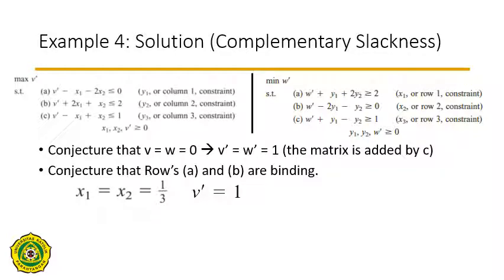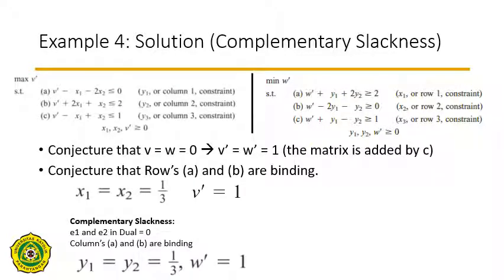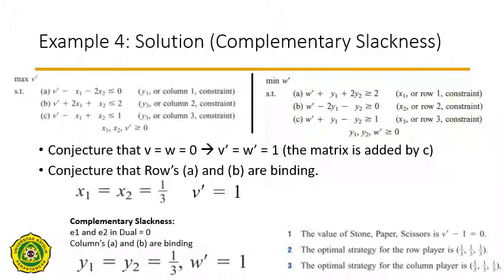We have seen how to use the concepts of duality — complementary slackness and the dual theorem — to obtain the value of the game and the optimal strategies for both the row player and column player. In the next video, we are going to look at other game examples and solve them to obtain the optimal solutions using the concept of duality.